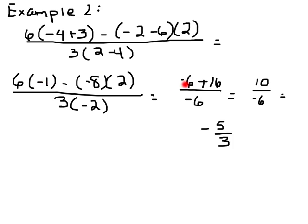Now, 6 times negative 1 is negative 6. Negative 8 times 2 is negative 16, but then this makes it positive 16. And 3 times negative 2 is negative 6. I'll add the two top numbers. Negative 6 plus 16 is positive 10, divided by negative 6. And I can reduce that to negative 5 over 3. And that would be my final answer.